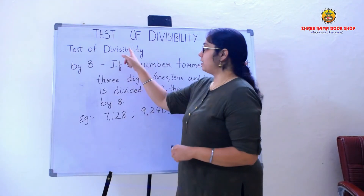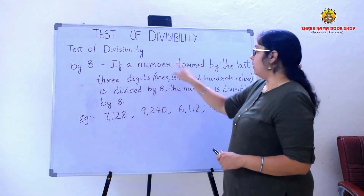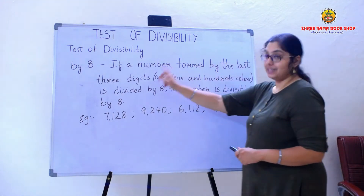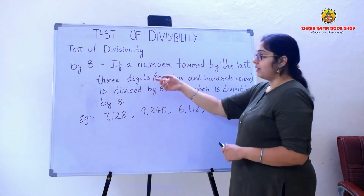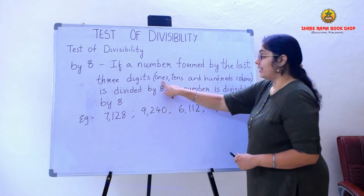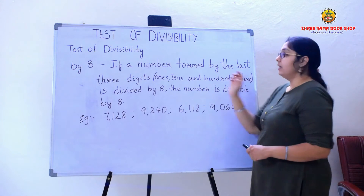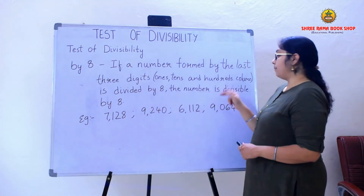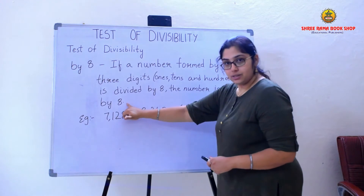Now we will learn the test of divisibility by 8. If a number formed by the last three digits — that is the 1's, 10's, and 100's place — is divided by 8, then the number is divisible by 8.